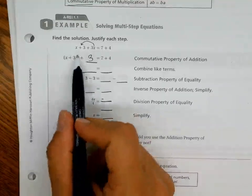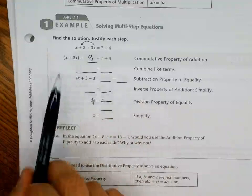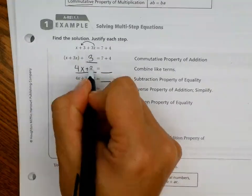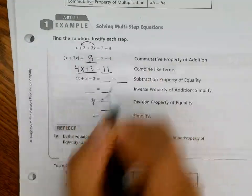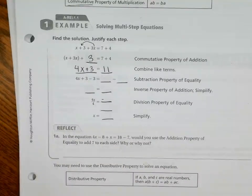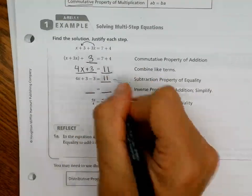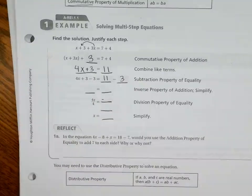Combine like terms is the next step. If they combined the terms, 3X plus 1X is 4X. We bring down that 3. Then 7 plus 4 is 11. All they did here is they combined these terms and they combined these terms. Now we have 4X plus 3 minus 3 equals 11 minus 3. All they're doing is showing you that they're subtracting 3 from both sides, which is the subtraction property of equality.